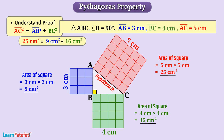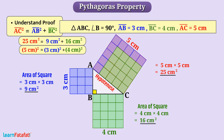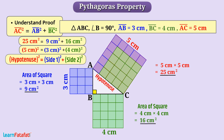That means we can arrange the area of squares of side 3 cm and 4 cm within the area of the square of side 5 cm. That means the area of the square of side 5 cm is equal to the sum of areas of the squares of side 3 cm and 4 cm. In general, for right angle triangle ABC with right angle at B, we write AC squared is equal to AB squared plus BC squared. That is, the square of the hypotenuse is equal to the sum of squares of the other two sides of the right angle triangle.